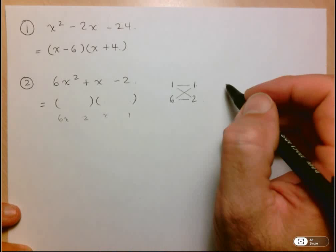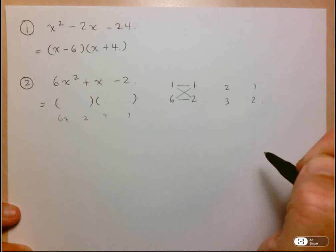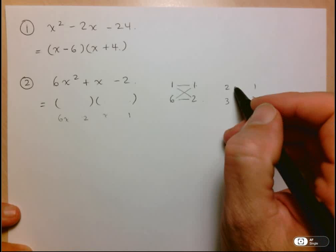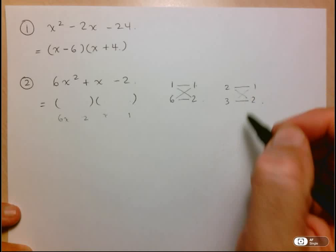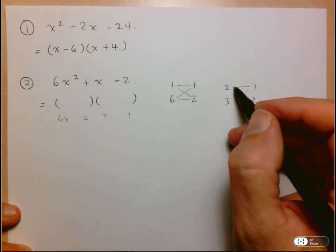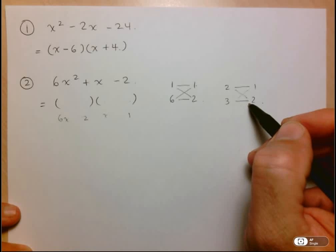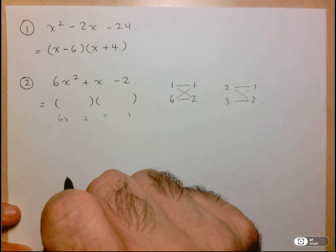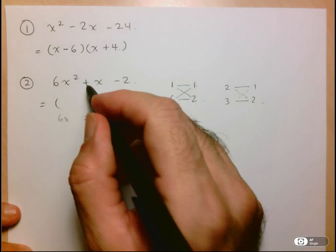Now I purposely chose the one that I knew wasn't going to work. Let's take the 2 and the 3 and do the same thing. You can either have 2 and 1 and 3 and 2 or the diagonal option. But if we look at the straight line option, 2 and 6, that still won't add up to positive 1. But if we look at 4 and 3, that will work.